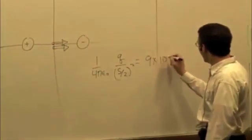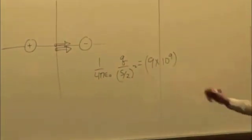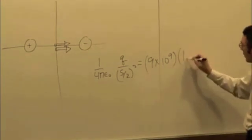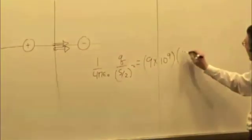So that's 9 times 10 to the 9th. Oh, I forgot to put the constant up. Someone should have yelled at me for not putting the constant up. I apologize for that. What was the charge? 3 times 10 to the minus 9.